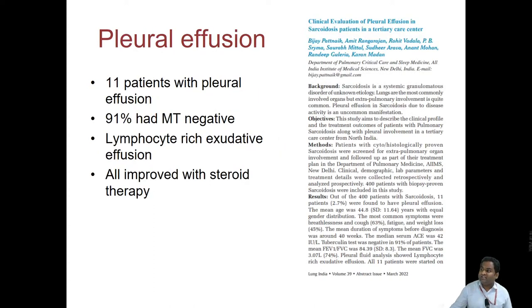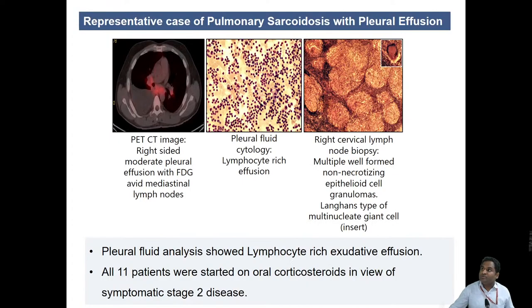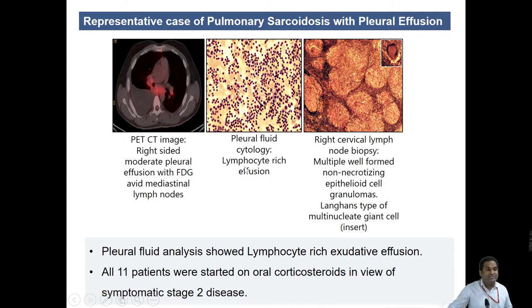Parenchymal involvement occurs in the form of ILD with predominantly nodular involvement. It can have endobronchial disease, fibrocystic disease, bronchiectasis, or mycetoma. Pleural disease is uncommon in sarcoidosis; pulmonary hypertension class 5 can also occur. A case series of 11 patients with pleural effusion from our department showed that all patients had a lymphocyte-rich exudative pleural effusion, and all effusions improved with steroid therapy. One representative case had multiple large mediastinal lymph nodes, unilateral pleural effusion, and a cervical lymph node biopsy confirmed sarcoidosis.